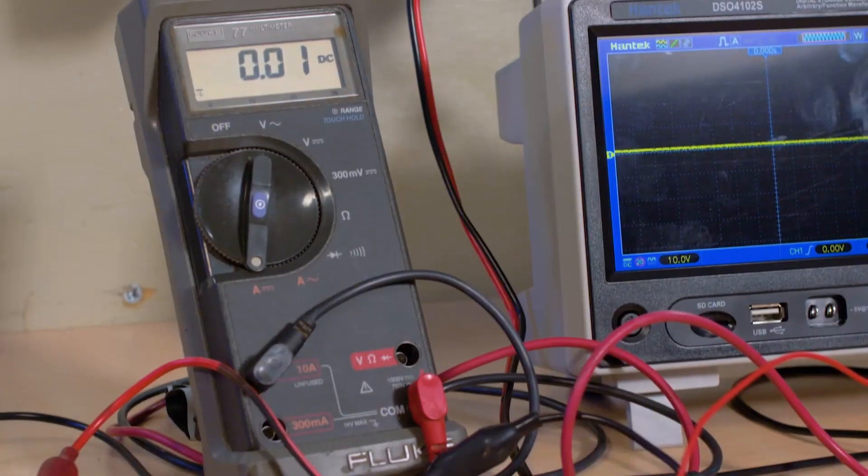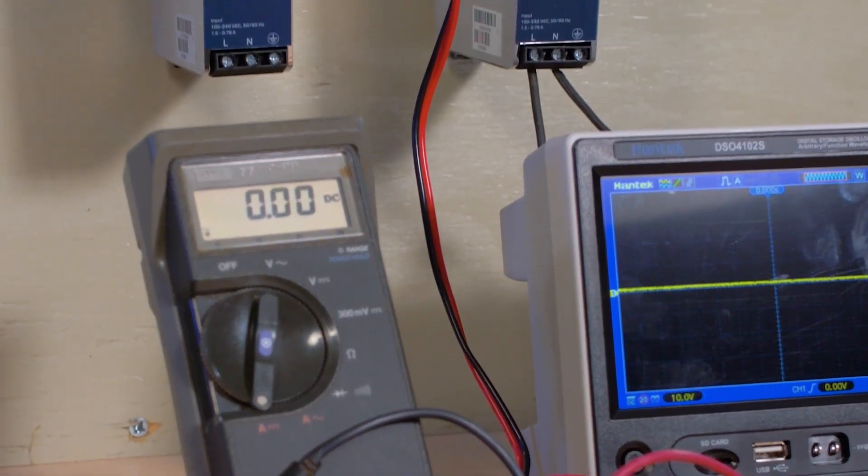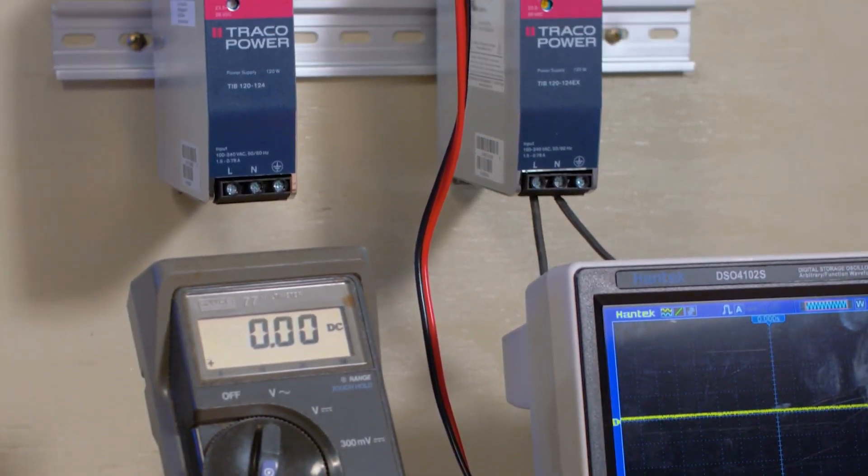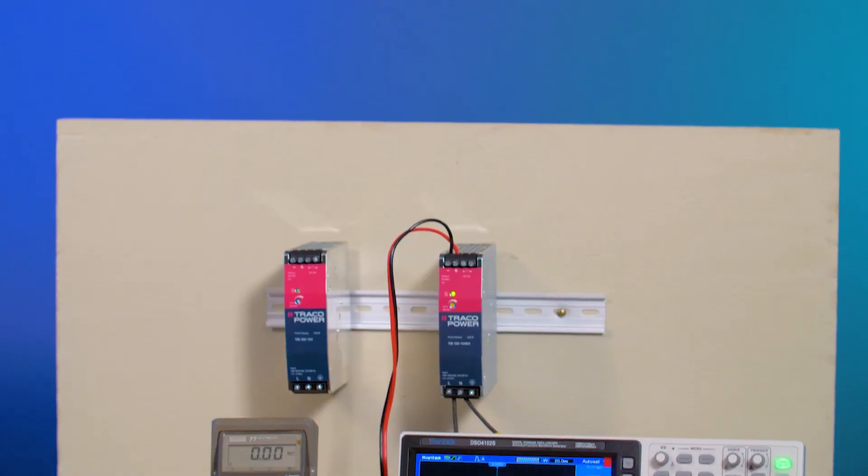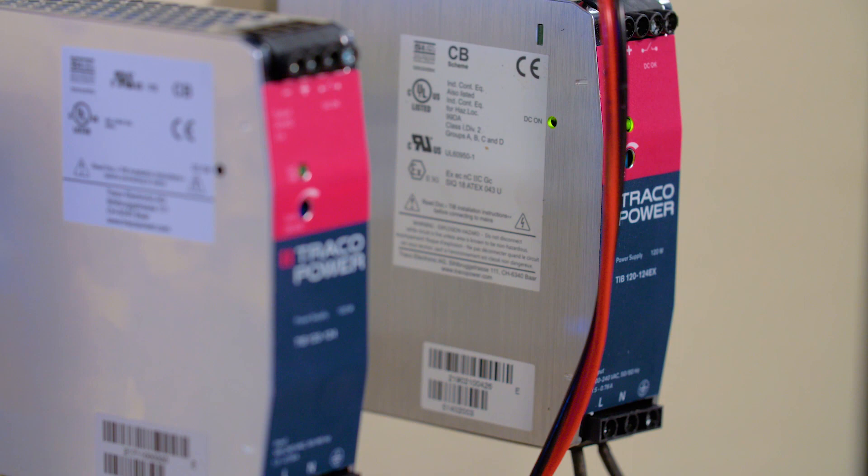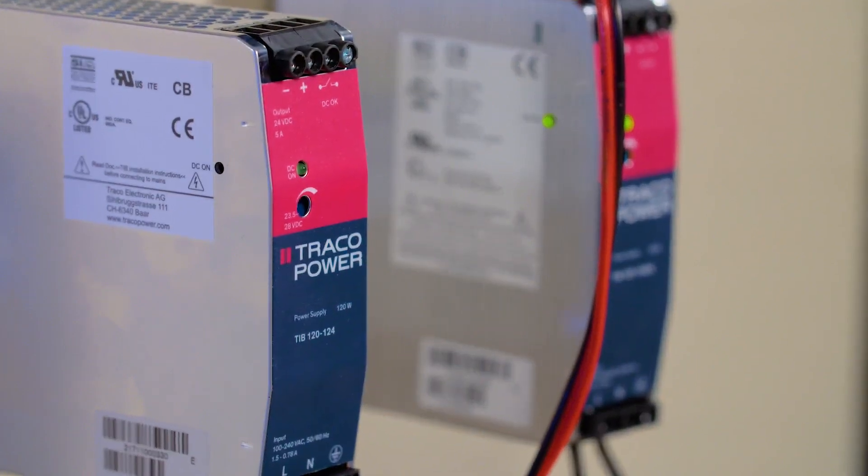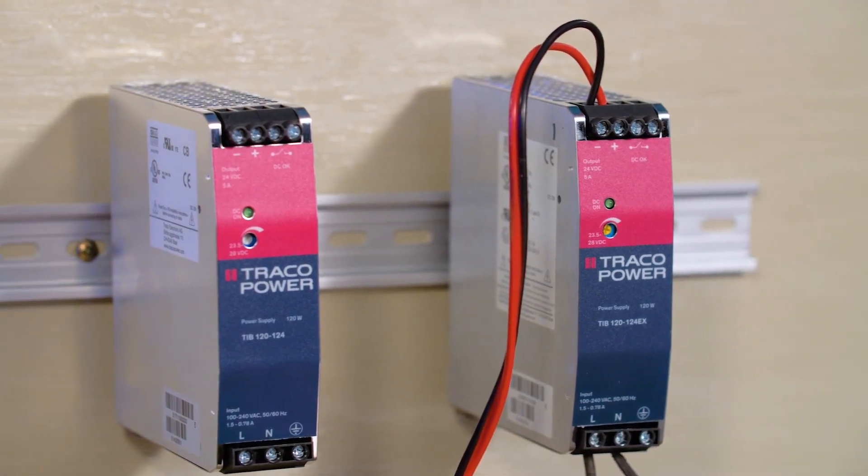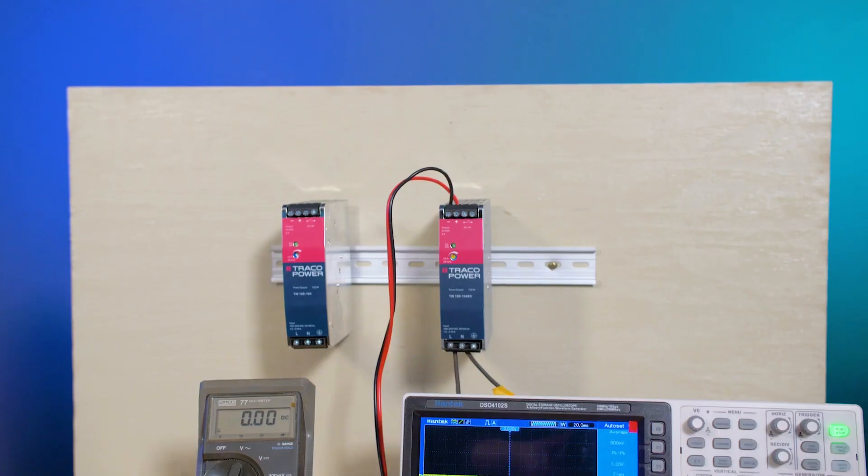Traco says they typically operate in the 90 to 95 percent efficiency range, depending on the output voltage, and support a full load temperature range of minus 40 to plus 60 degrees centigrade with no derating and up to plus 70 centigrade with only a 20 percent derating. What that means is they can run cool though they are strictly cooled by convection.